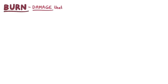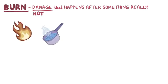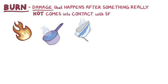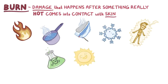A burn is the damage that happens after something really hot, like a fire, hot water or steam, or even a hot object comes into contact with skin. But burn injuries can also be caused by extreme cold, electricity, some chemicals like strong acids, or radiation, like from the sun or medical treatments.